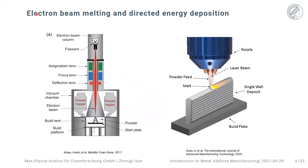Another technique commonly mentioned is Electron Powder Bed Fusion — I'll simply refer to it as Electron Beam Melting. Looking at the schematics, it is very similar to laser-based systems except the energy source is an electron beam. Typically the chamber build size tends to be a little bit larger compared to the laser system. I will show a comparison of all these techniques in the next slide.